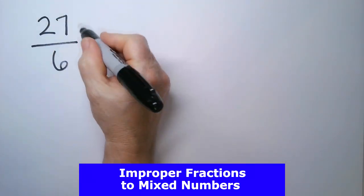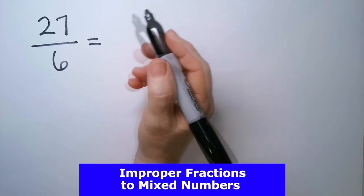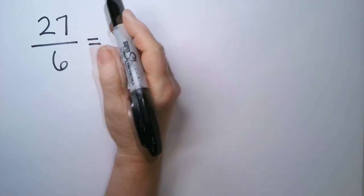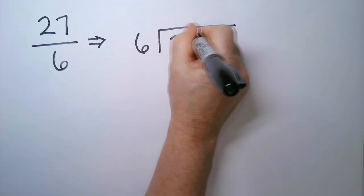To turn an improper fraction into a mixed number, we simply need to divide the top by the bottom. So it looks like this: 6 into the numerator, 27.